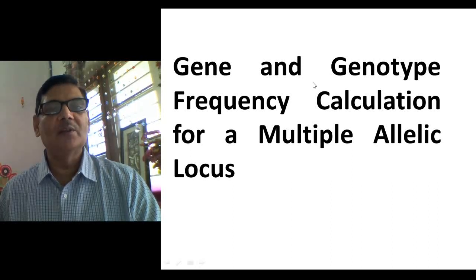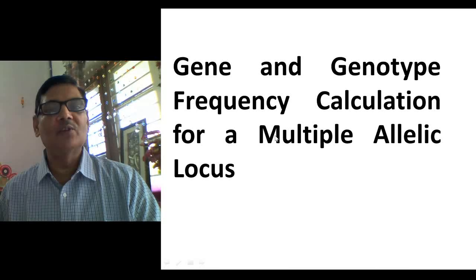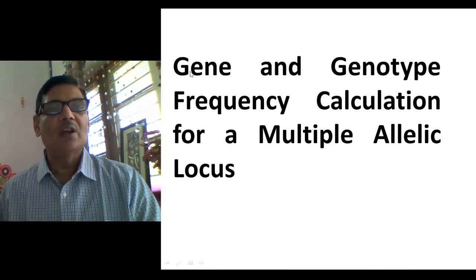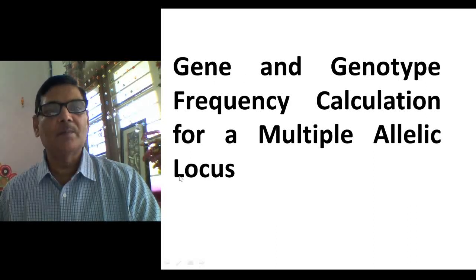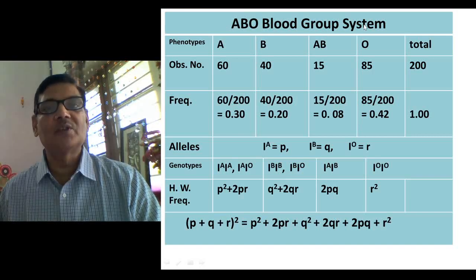We have seen the calculation of allelic frequency for a gene locus represented by two alleles. But there may be cases when a single gene locus is represented by more than two alleles. Through this presentation, I am going to explain gene and genotype frequency calculation for a multiple allelic locus, using the ABO blood group system.